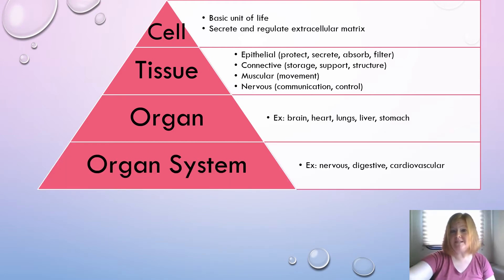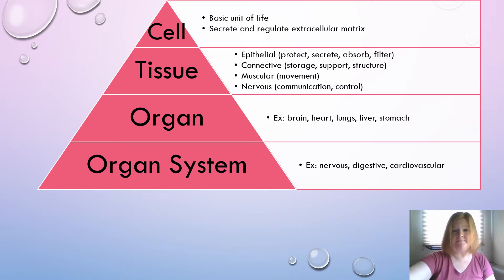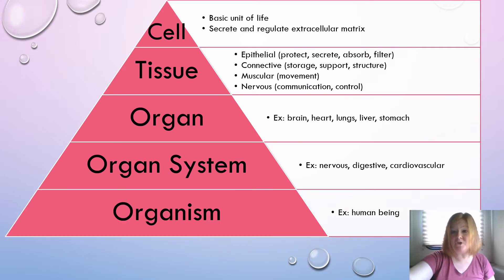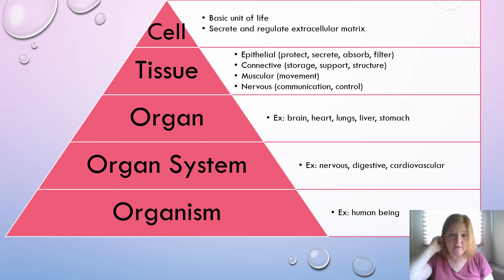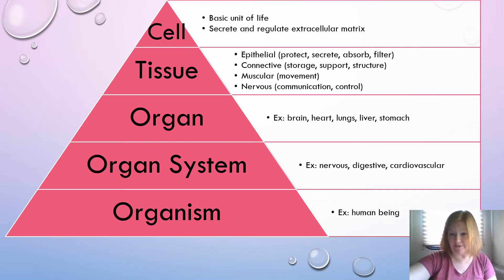Then we have an organ system — a group of organs that function together — like the nervous system, digestive, cardiovascular, muscular, and skeletal. And then you have an organism, an individual living thing made up of those organ systems. In anatomy and physiology we talk about human beings exclusively, but in other biology classes you could talk about other living things — plants, animals, mushrooms — any single individual living thing.